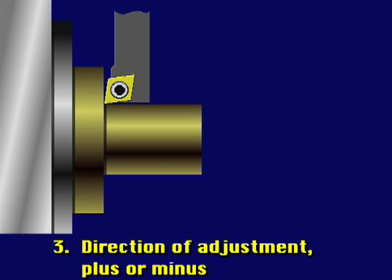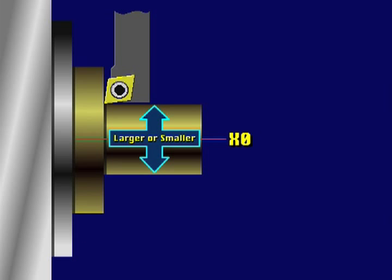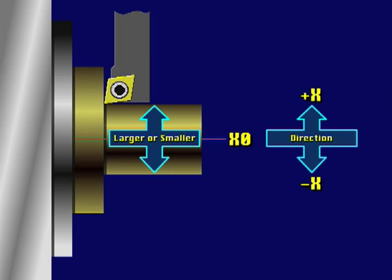The sign of the adjustment value is determined by the axis direction that the tool must move to correct the feature. For example, if the tool moved in X to this position before turning the OD, the sign of the offset value will depend on whether the tool must cut deeper or less deep. It is the direction of tool or bar movement to correct the feature size that is important, not the sign of the tool's coordinates within the grid.